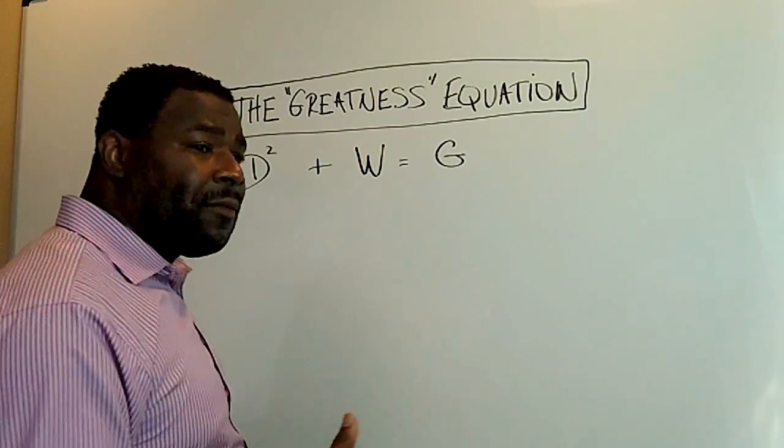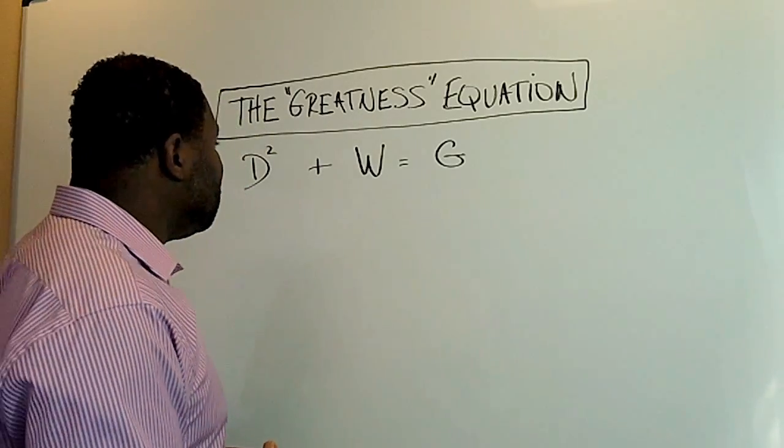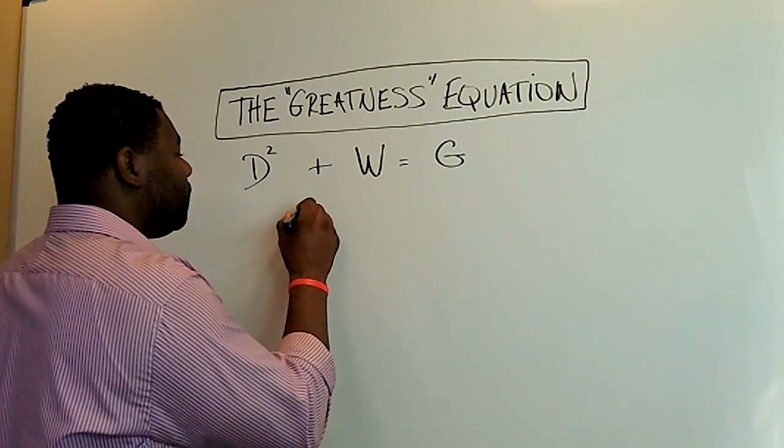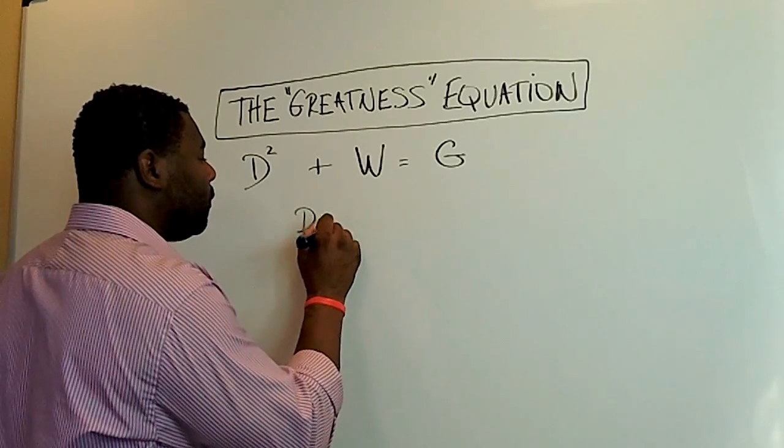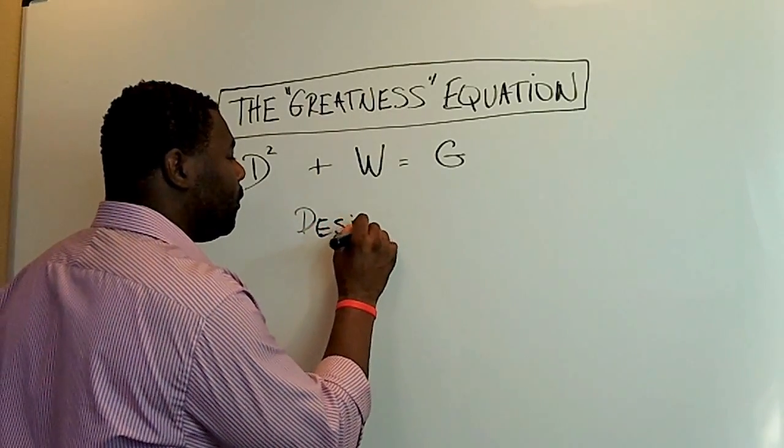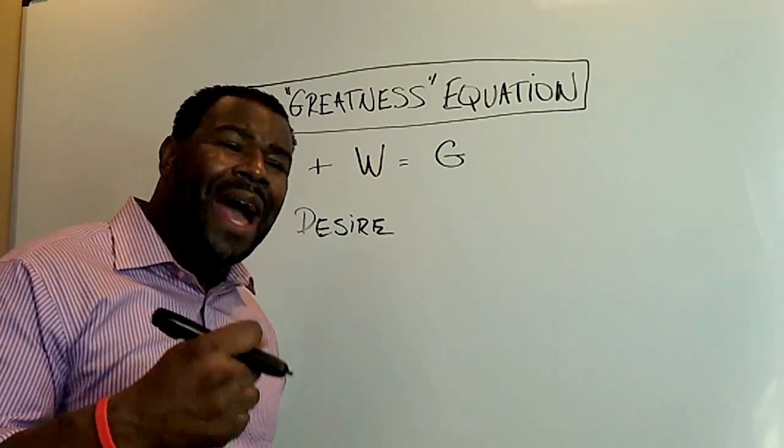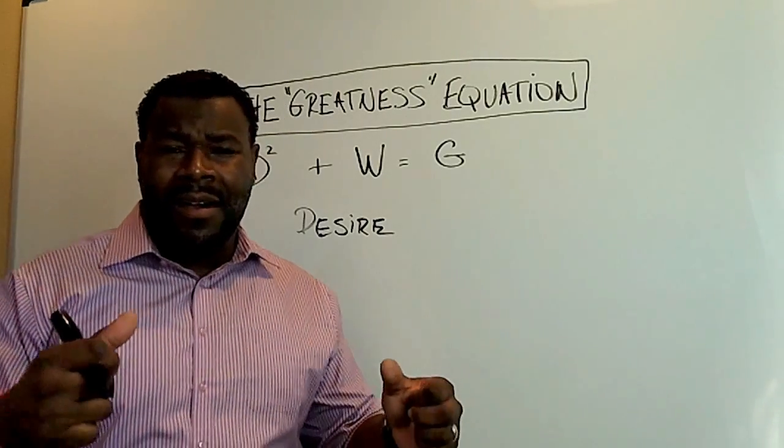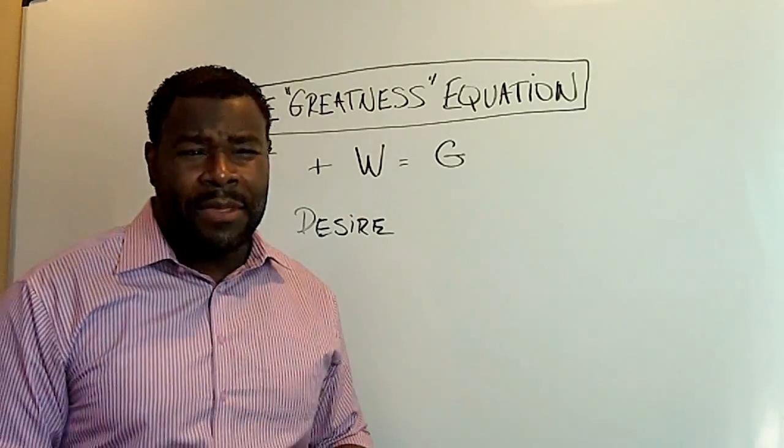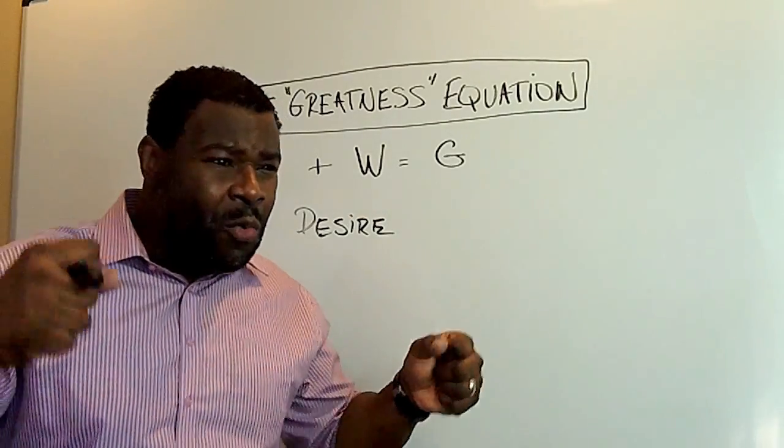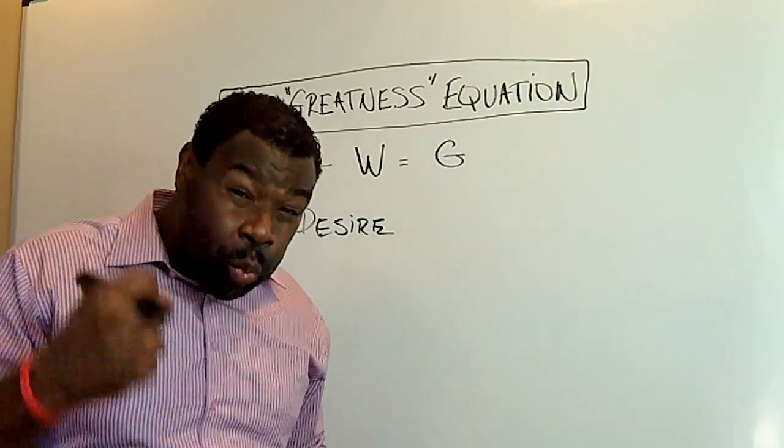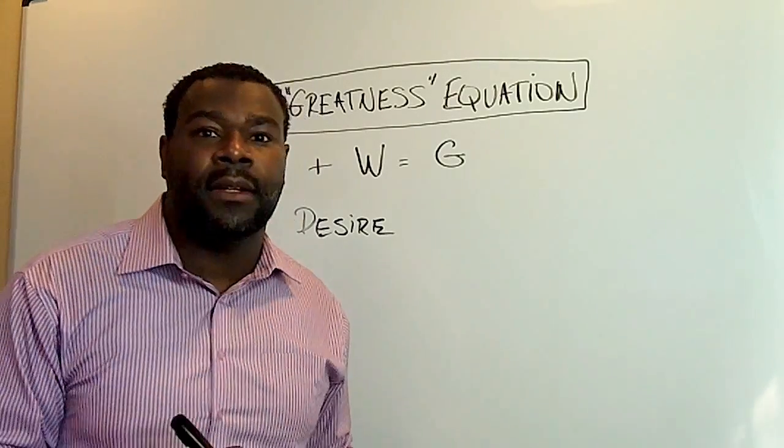First off, we talk about the first D of D squared. We talk about desire. You've got to have a longing for something. You've got to have strong will. You've got to want something. You've got to desire something.